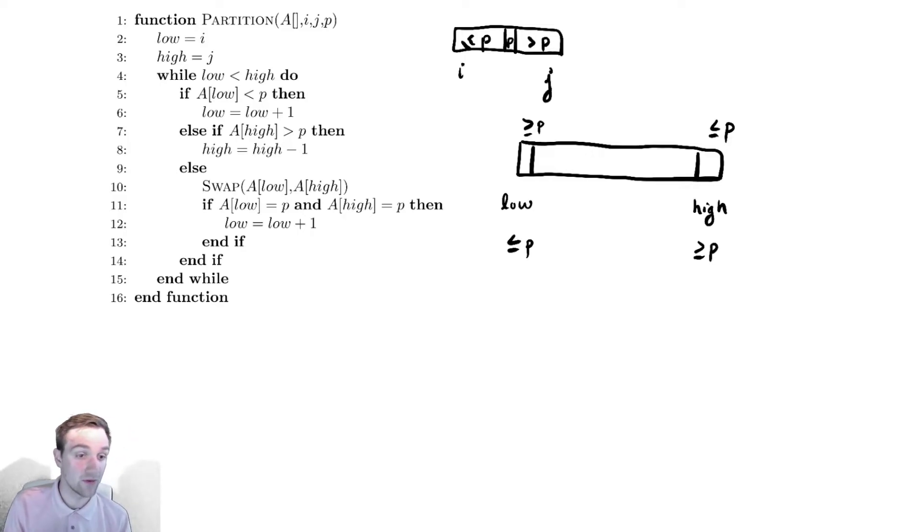If they are both actually equal to p, we will move the bottom value up by one, just to deal with a sort of fringe case where we would infinitely swap otherwise.